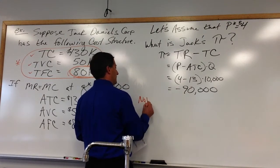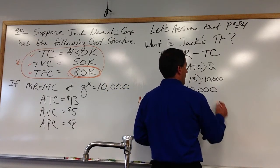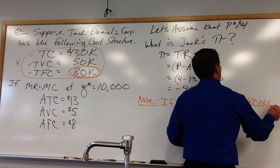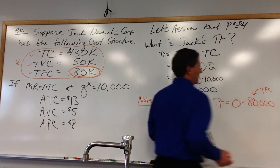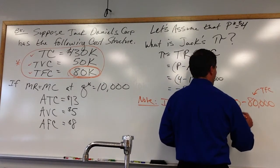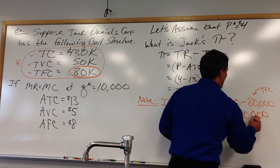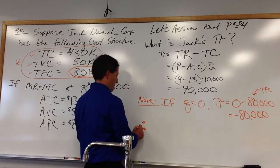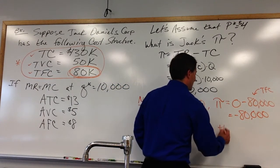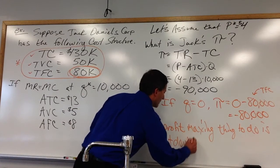Note, if quantity equals zero, then profits equal total revenue of zero, but only fixed costs of $80,000, which is our total fixed cost. Profits equal negative 80. Therefore, the profit maxing thing to do is shut down.